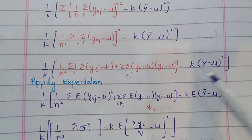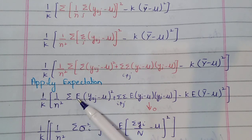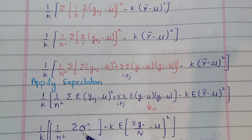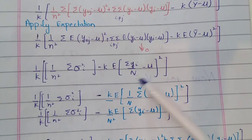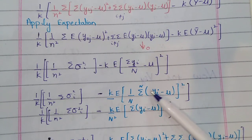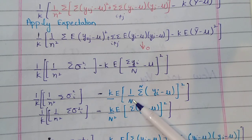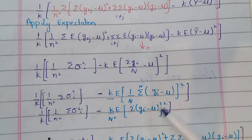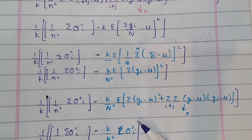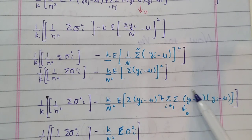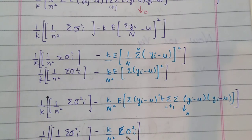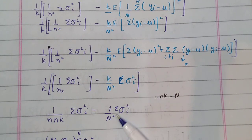We get the whole square term plus a double summation term where i and j are not equal, and another n-square term. Now we apply the expectation. The expectation of the squared term gives sigma square, and the double summation term with correlation gives zero due to our assumptions. The other term is y-bar. We take 1 over n and summation by N common, so the term comes out with a square, and when we apply the expectation, the term becomes sigma square and the correlation term becomes zero.